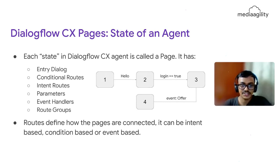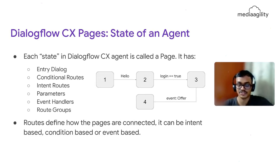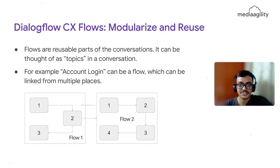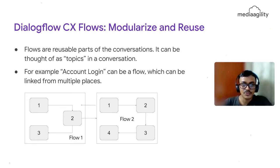A flow has intent routes, conditional routes, parameters, event handlers, and routes. From one page to the next, the user can transition by saying something — that is an intent route — or by a condition, or by an event, like receiving a new offer and transitioning to the next page. Flows are a group of pages modularized into a single kind of function so they can be called and reused.